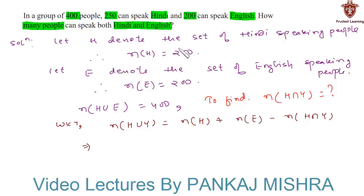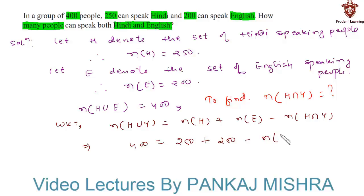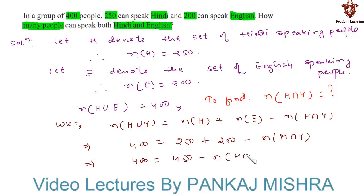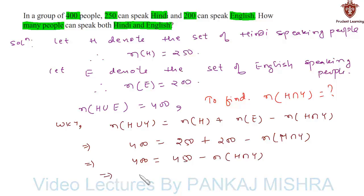Substituting the given values, we have: 400 equals 250 plus 200 minus the number of elements in H intersection E. This can be written as 400 equals 450 minus the number of elements in H intersection E.